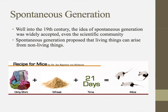Back in the day, people used to believe in spontaneous generation — 'generation' meaning to make or come about, 'spontaneous' meaning without rhyme or reason. People actually believed that small things like mice, bacteria, and insects came out of nowhere. They thought mice came from dirty clothes with food on them left around too long, and that those dirty clothes spontaneously gave birth to baby mice. This was widely accepted well into the 19th century — the 1800s, not that long ago.